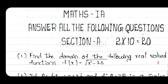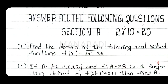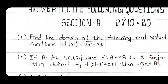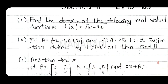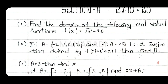Let's go to the paper first. If you first practice this guest paper, you will be able to practice a little bit. In the first section, we have 10 questions. Each question is 2 marks. So, first question: find the domain of the following real valued function — f of x equals to root over x squared minus 25.